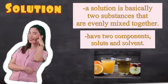For example, as you can see in the picture, there is orange juice and apple juice. Orange juice is a combination of orange extract and water — the orange extract is the solute and water is the solvent. The same applies to apple juice: the apple extract is the solute and water is the solvent. Solutions are known as homogeneous because they appear in one phase only.